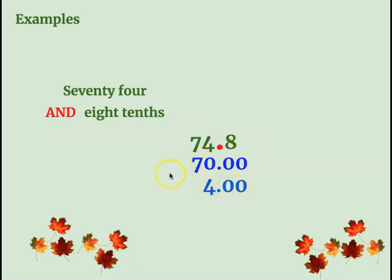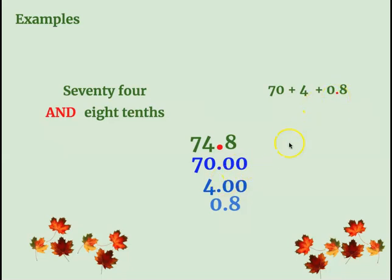What about that 8? That could be tricky. You'll notice I brought the 8 and its decimal straight down, and put a zero in the front just to let us know there's a decimal coming. And there you go — we have 70 plus 4 plus 8 tenths. That's how we write 74 and 8 tenths in expanded form: 70 plus 4 plus 8 tenths.